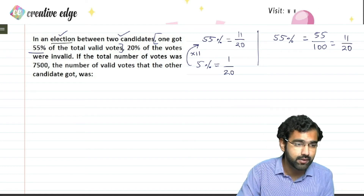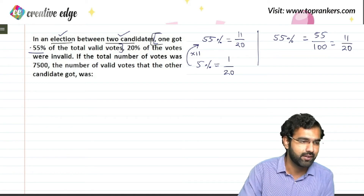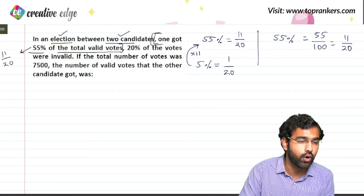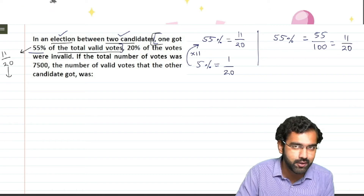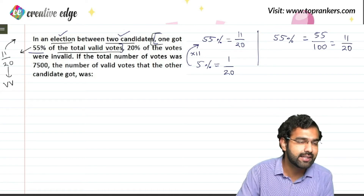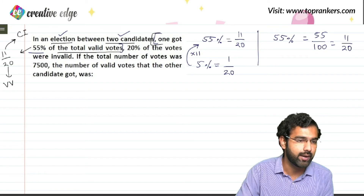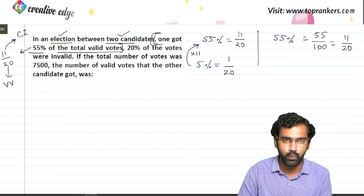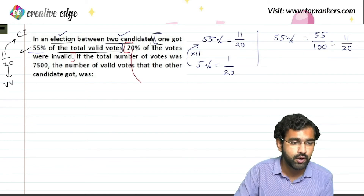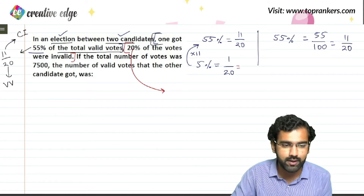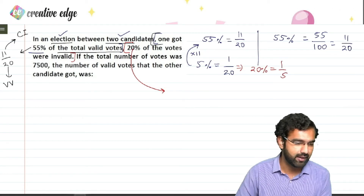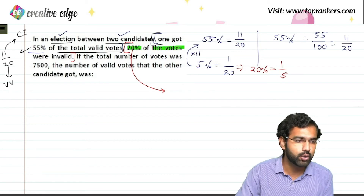In an election between two candidates, one candidate got 55%, which as a fraction is 11/20 of the total valid votes. So if 20 in the denominator represents total valid votes, then 11 in the numerator is the votes received by candidate one. We are also told that 20% of the votes were invalid. Since 5% is 1/20, 20% is 1/5, meaning out of every 5 total votes polled, 1 is invalid.